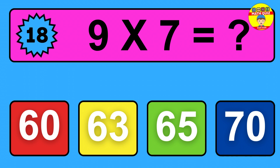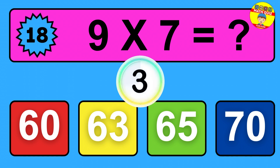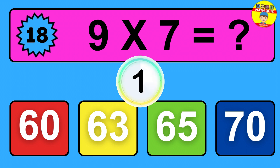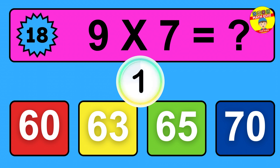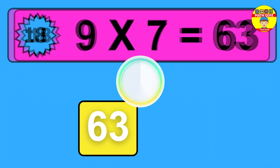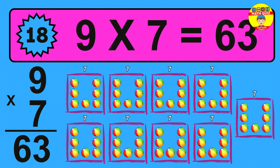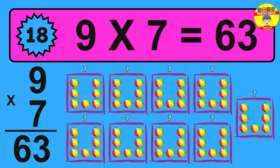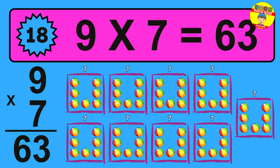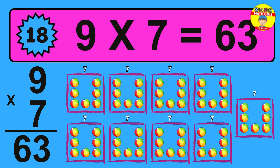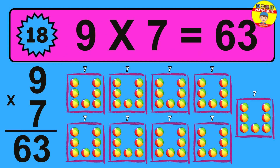Question 18: 9 times 7 equals what? The answer is 9 times 7 is 63. To calculate, we have 9 groups with 7 balls each one.